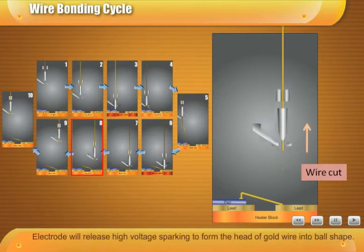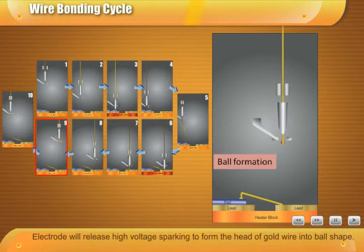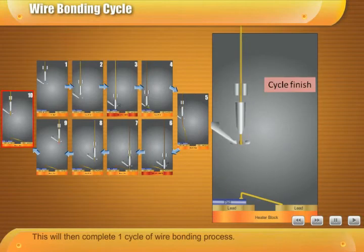Electrode will release high voltage sparking to form the head of gold wire into ball shape. This will then complete one cycle of wire bonding process.